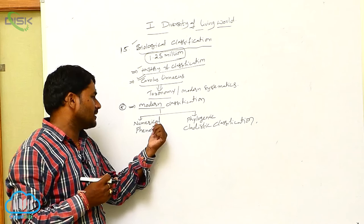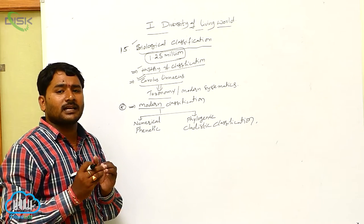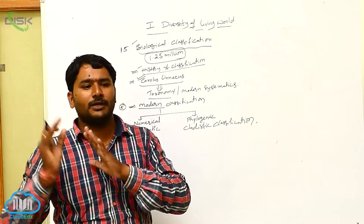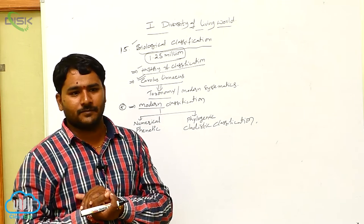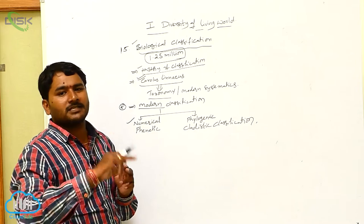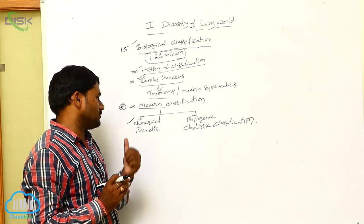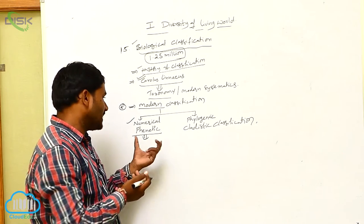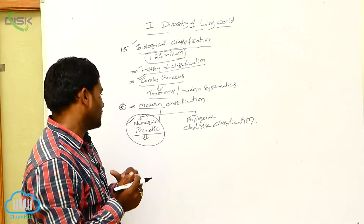In numerical classification, some average characters are selected and observed in living organisms. When an organism follows more than the average number of characters, it is grouped into a single category. For example, if you take 10 characters and apply them to 10 individuals, those following more than 6 or 7 characters are grouped together. Only external (phenetic) characters are considered in numerical taxonomy.